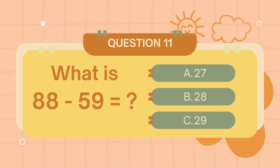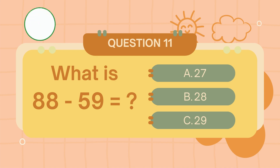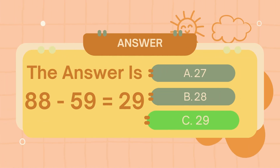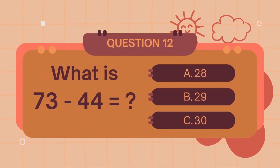What is 88 minus 59? The answer is 29. What is 73 minus 44? The answer is 29.